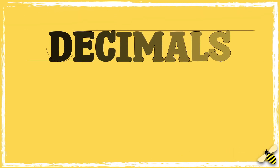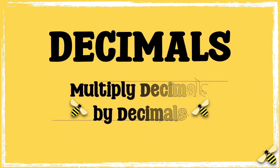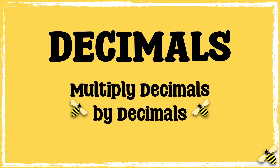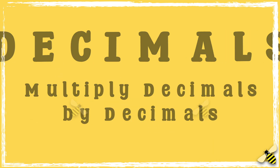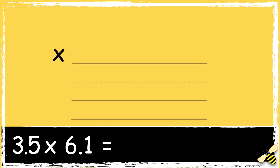In this video, we're going to be multiplying decimals by decimals. Here is a calculation: 3.5 multiplied by 6.1. To work this out, we're going to do some long multiplication.